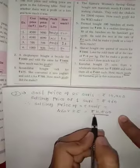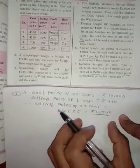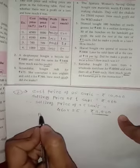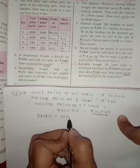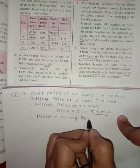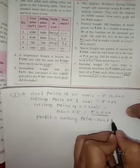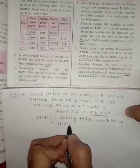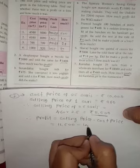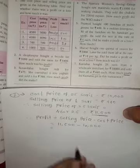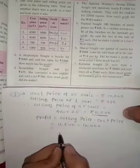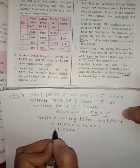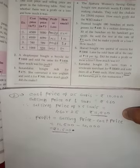We already know this will be a profit. The formula for profit is: Profit equals selling price minus cost price. The selling price is rupees 11,500 and the cost price is rupees 10,000. So the profit is rupees 1,500. Kanta made a profit of rupees 1,500.